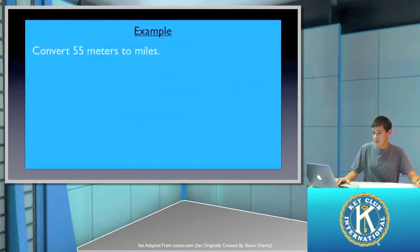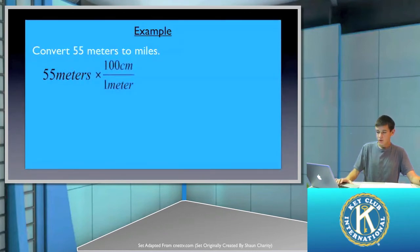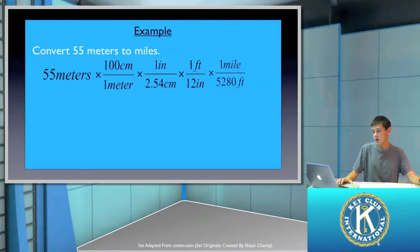So let's apply this to an example now. Convert 55 meters to miles. So to begin, our starting units are meters. There are 100 centimeters in one meter. There is 2.54 centimeters in one inch. There are 12 inches in one foot. And there are 5,280 feet in one mile.